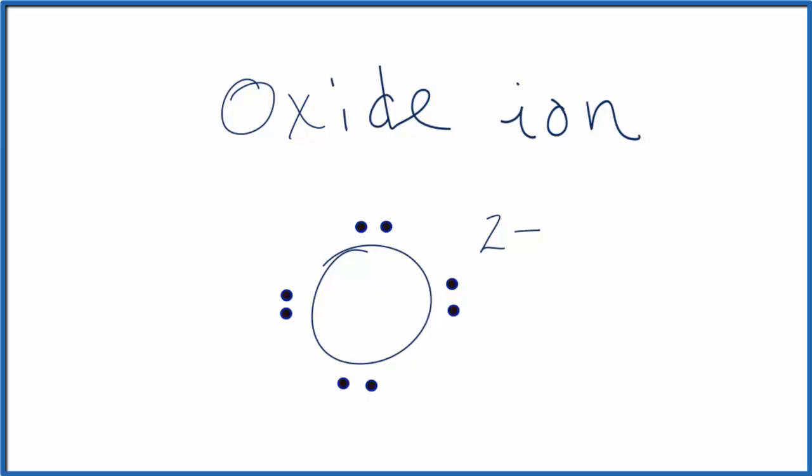So now we have eight valence electrons, and that makes this the Lewis structure for the oxide ion. We should do one more thing. Normally you'll see brackets put around these negative ions, so we'll put a bracket here and here, and that'll be the correct notation for the oxide ion.